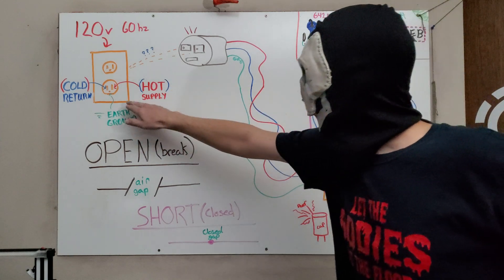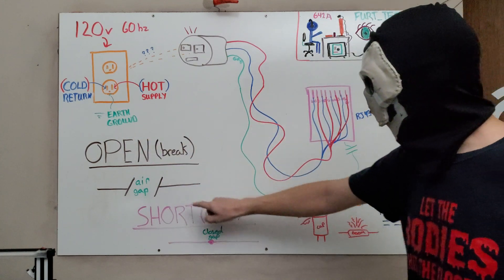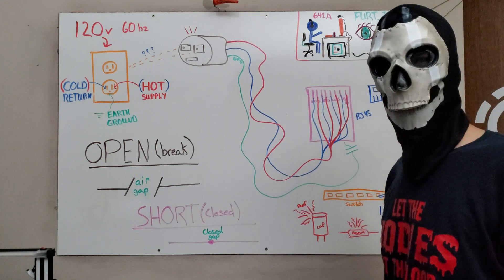Very simply put, if Mr. Plug is plugged into the outlet and connected to a Cat5 cable, and it's done in a way where there is a break between the supply and the return, nothing will happen.